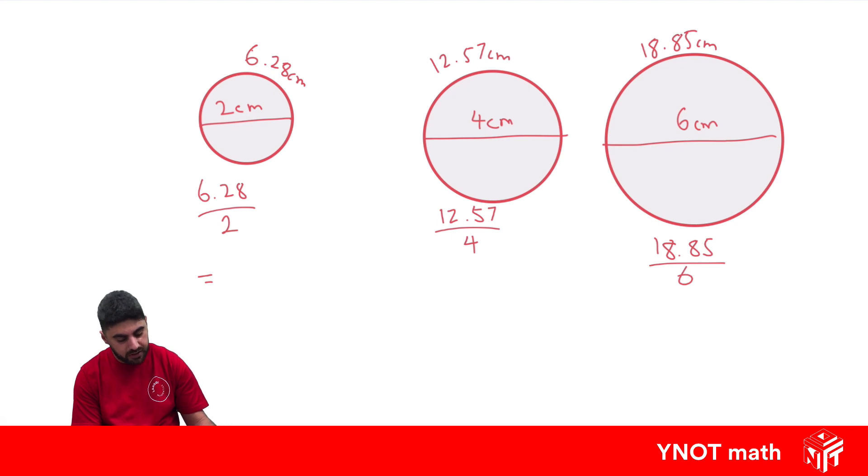And if you put those in the calculator, you'll get 3.14, 3.14, and 3.14. Well that's pretty interesting because they're all 3.14. And you might recognize that 3.14 is about what pi equals. And this is where pi comes from. It's the relationship between a circle's diameter and its circumference.